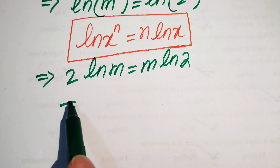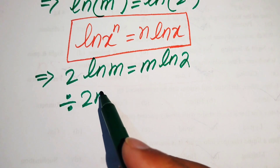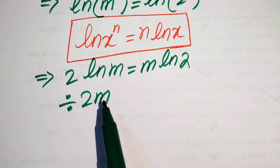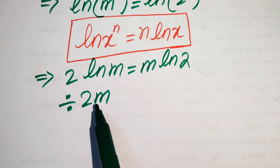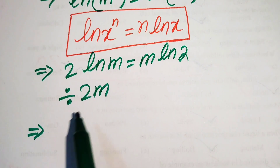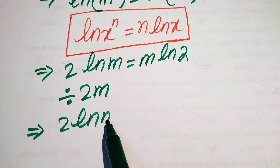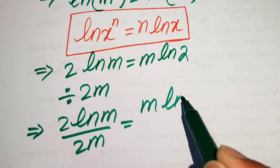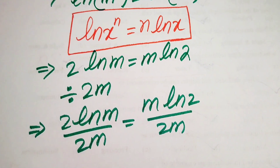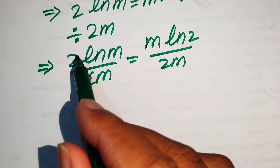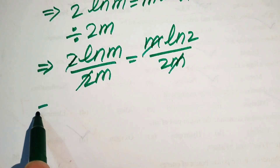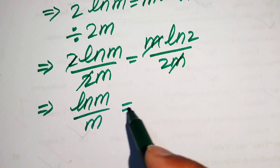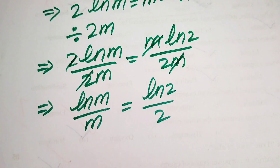In the next step we divide both sides by 2m in order to isolate terms involving m on the left and constants on the right. After cancellation — m cancels with m, and 2 cancels with 2 — we get log(m) divided by m equals log(2) divided by 2.